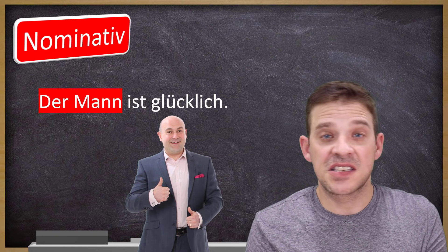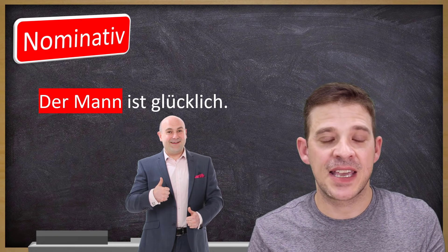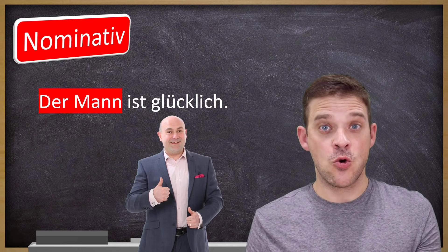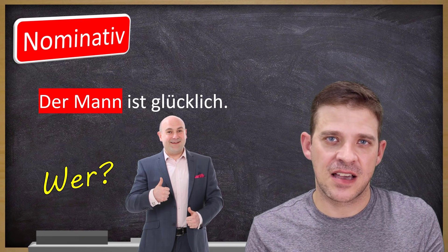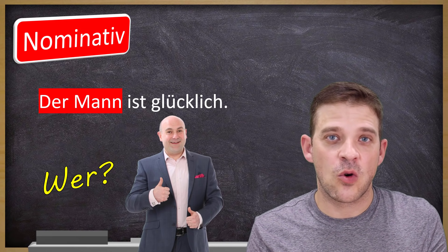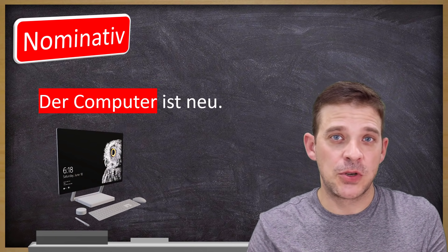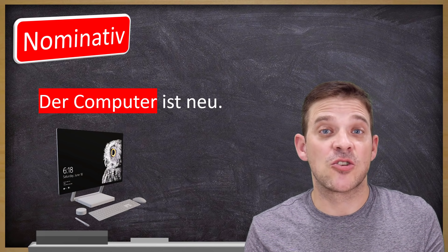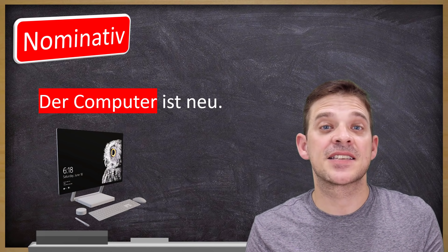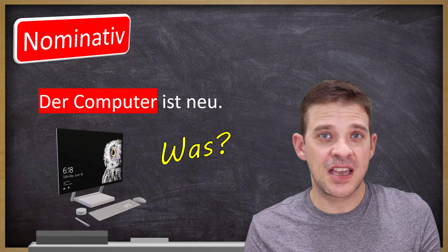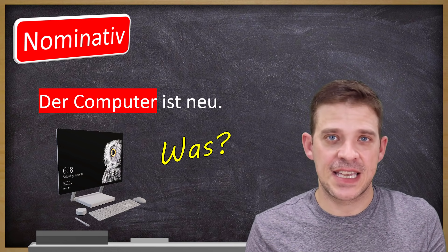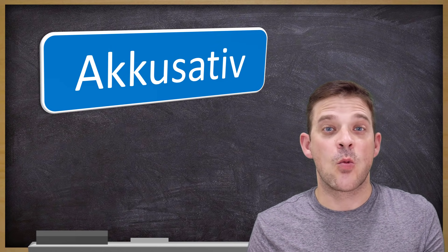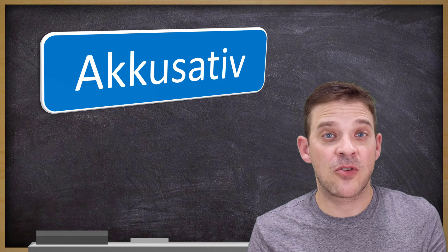Let's start with nominative. As I said, nominative is always for the subject. For example: 'Der Mann ist glücklich' — the man is happy. You can ask 'wer ist glücklich?' — who is happy? — and the answer is 'der Mann.' For a thing: 'Der Computer ist neu' — the computer is new. You can ask 'was ist neu?' — what is new? — and the answer is 'der Computer.'